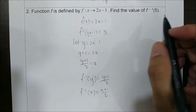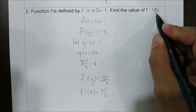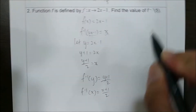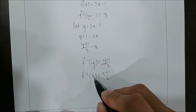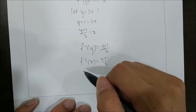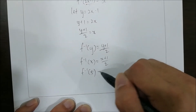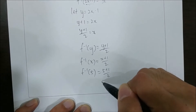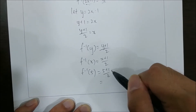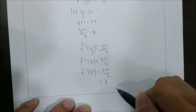Since the question asks for f inverse of 5, the x here we replace with 5. It becomes f inverse of 5 equals to 5 plus 1 over 2. So you get the answer: 5 plus 1 is 6, over 2 is 3.